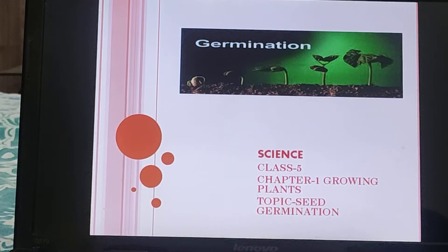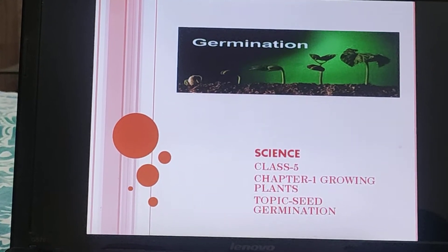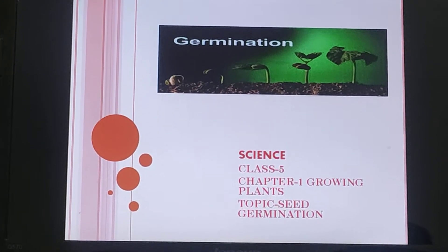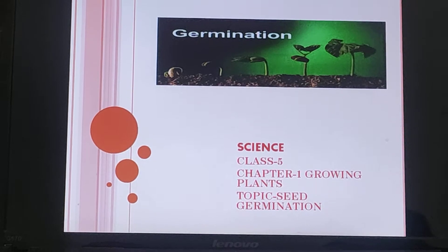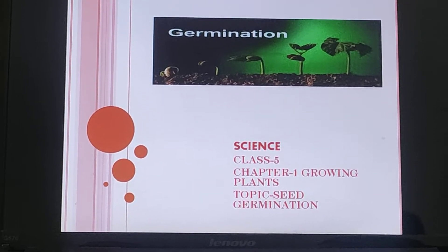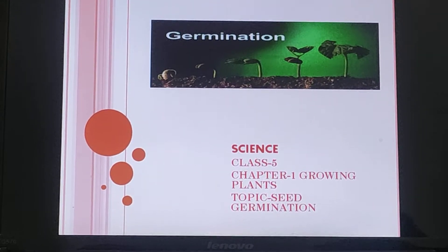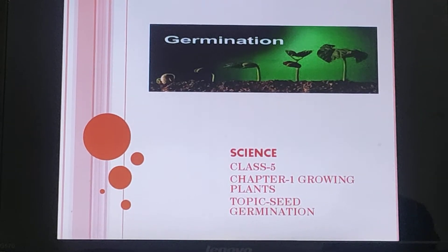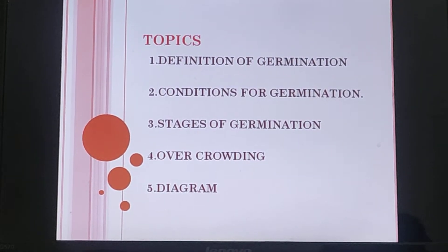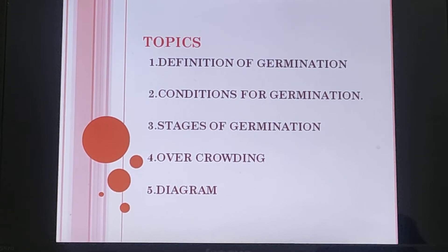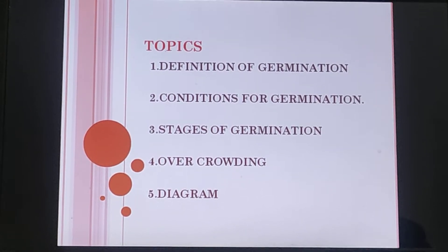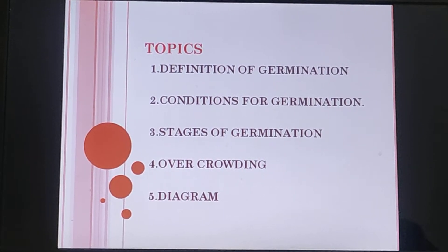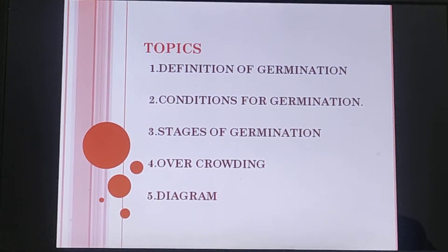Hello kids, I hope you all are doing good. Welcome to your science tutorial. Today we'll be taking Class 5 Science Chapter 1: Growing Plants, and the topic is seed germination. Be ready with your book, notebook, and pencil box. The topics which will be covered today are: definition of germination, conditions for germination, stages of germination, overcrowding, and diagram of seed germination.